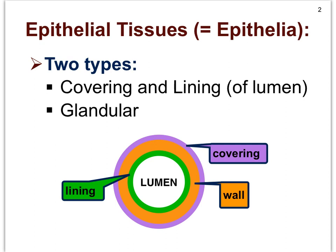Epithelial tissues, as you'll see, are often also referred to as the epithelia — a Latin way of referring to them. You'll see books do that quite often. So we have two kinds of epithelial tissues. One type is referred to as glandular. Basically every gland in your body is made up of epithelial tissue.